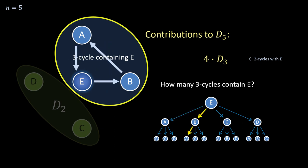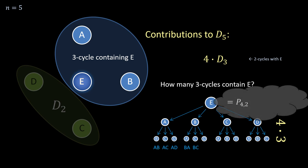All the other possibilities are represented by alternative paths down this tree, for a total of four times three possible three cycles containing e. This equals the number of ways to construct two-element permutations from a set of four. And four is of course five minus one, all elements except the newly added one.